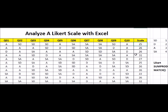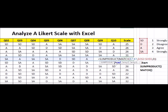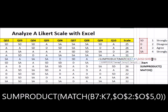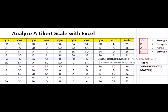So that's how you use Excel to analyze a Likert scale. The formula we use is SUMPRODUCT MATCH — looking across the row (B7 to K7) — and then the list of possible outcomes on the Likert scale: strongly disagree, disagree, agree, and strongly agree. Once you match them, SUMPRODUCT will take care of the rest. Thank you.